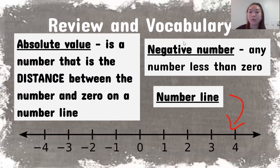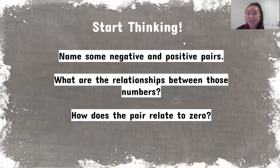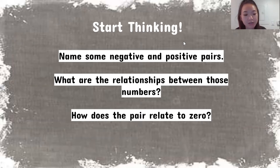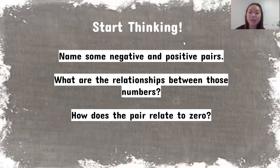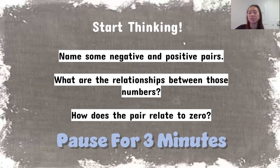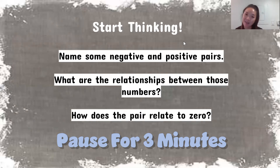Let's start thinking — name some negative and positive pairs. Think about two numbers that are negative and positive, what are the relationships between those numbers, and how does the pair relate to zero. Pause here for about three minutes to think about those answers and then we will go over them.